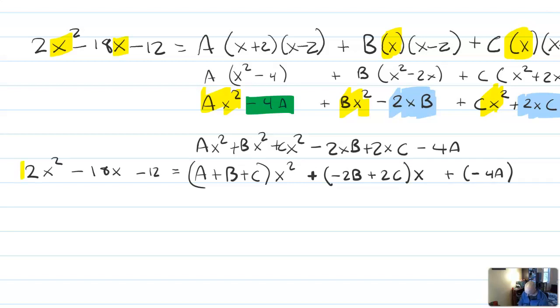So I'm going to study the parallel structure here and notice that the 2x squared has to match with the abcx squared. The minus 18x has to match with that term. And the minus 12 has to match with the minus 4a.